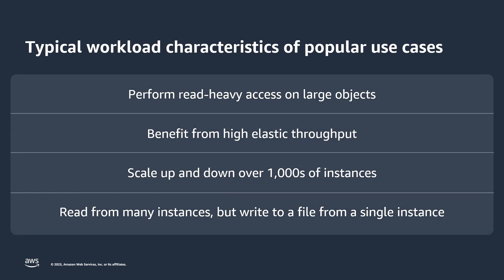These applications perform read-heavy access on hundreds of terabytes to petabytes of data in S3 data lakes and require S3's high elastic throughput as they scale up and down over thousands of instances. While they read large files over one or more instances, they write to a file from a single instance at a time, meaning they do not need shared file system features like file locking.